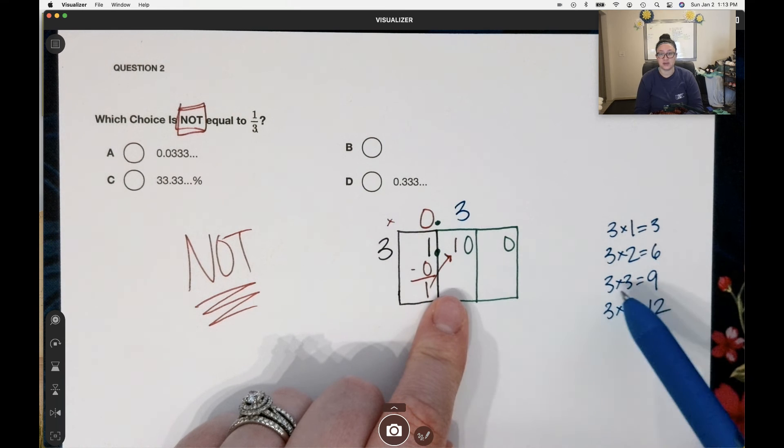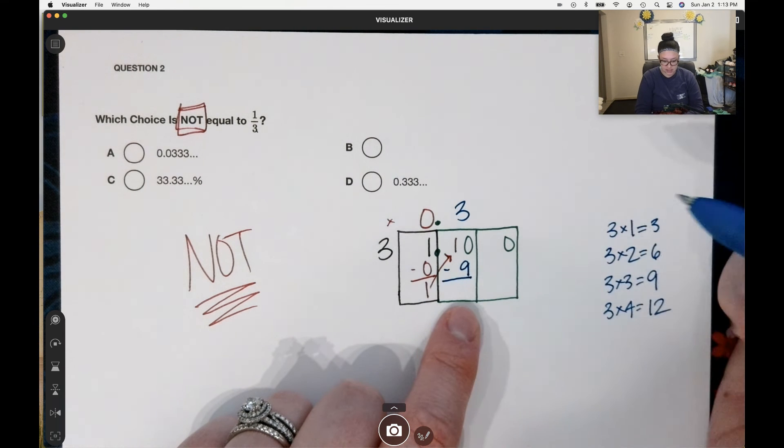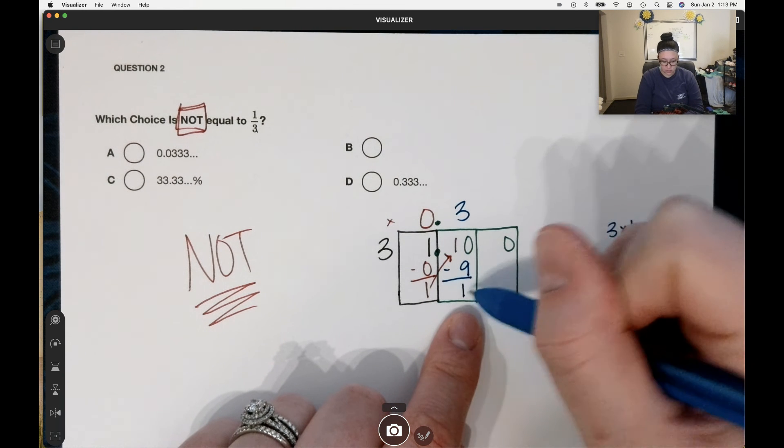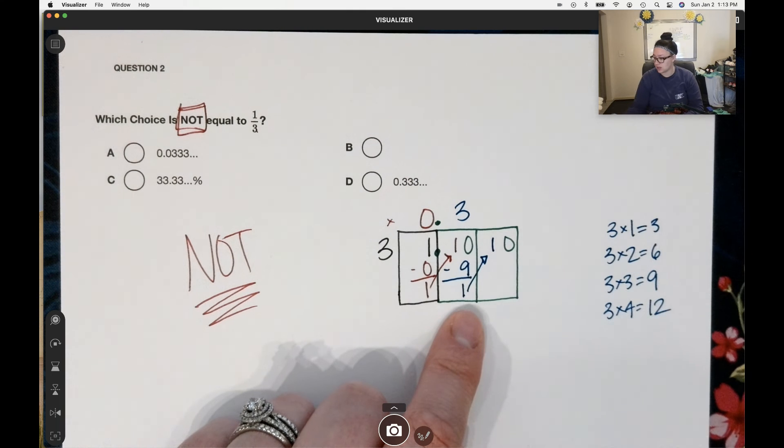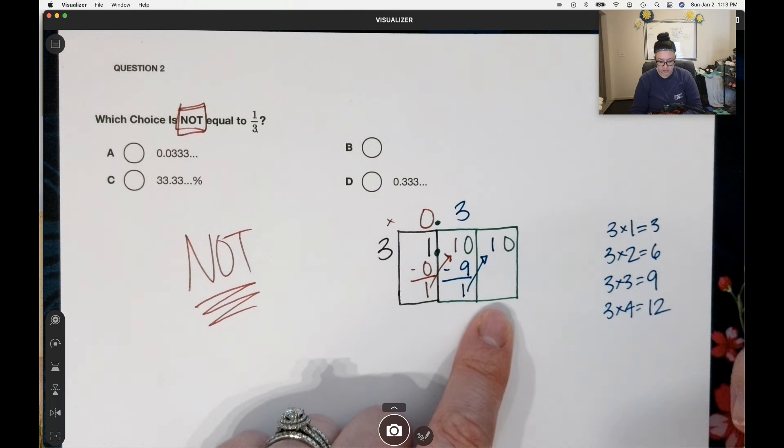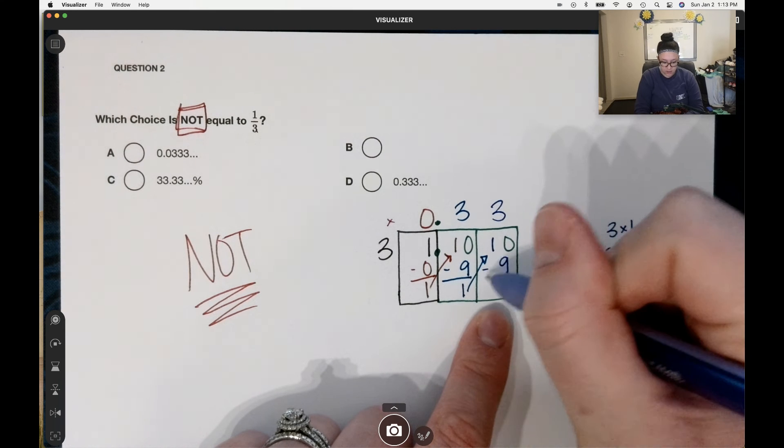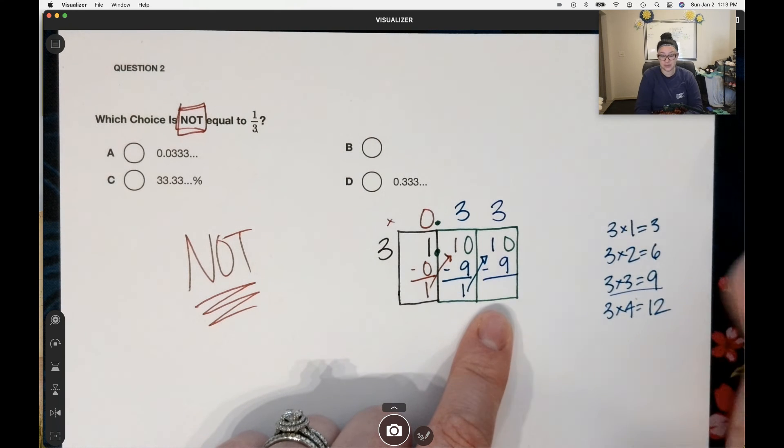Three times three gives us nine. Ten minus nine is one. We carry that little one over. Three goes into ten how many times? Again, three. We see we've got some repeating going on.